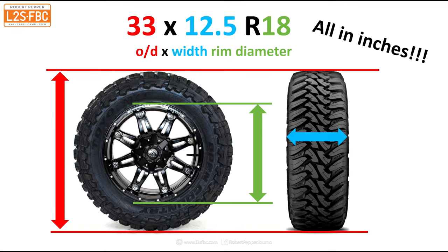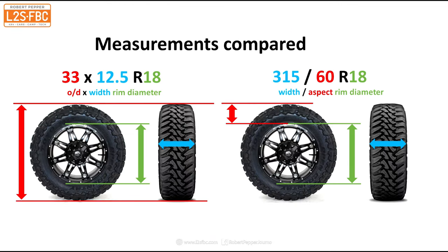Comparing the two systems: the 33×12.5×18 is equivalent to a 315/60 R18 — 315mm is about 12.5 inches, 60 percent of 315mm works out to roughly the same sidewall, and the 18-inch rim is identical. Thanks for watching — hope you found this useful. Stay tuned for more on four-wheel drives, cars, towing, tyres, and whatever else I can find interesting.